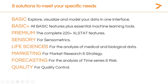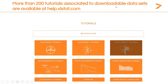Life Sciences is dedicated to biostatisticians and epidemiologists for analysis of medical and biological data, including features for survival analysis such as Kaplan-Meier, omics data analysis, and dose response. In Marketing, you'll find specific tools for conjoint analysis surveys. In Forecasting, you can analyze time series and risk. Quality is dedicated to quality control, SPC, and design of experiments. XLSTAT also has more than 200 tutorials associated to downloadable datasets online — each feature has a dedicated tutorial guiding you through implementation and interpretation using a real-world dataset.